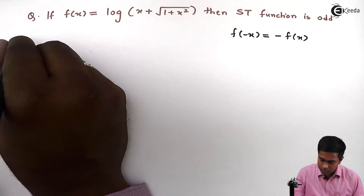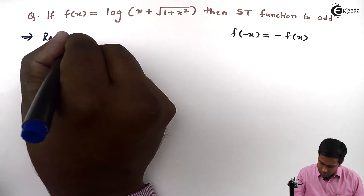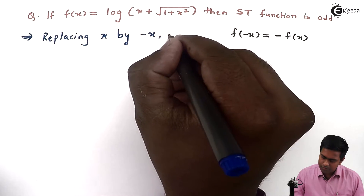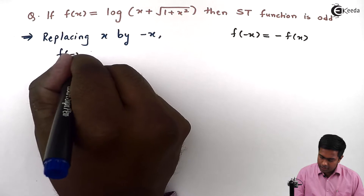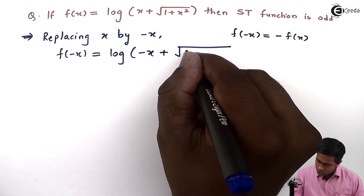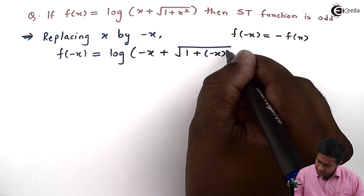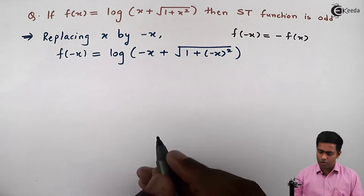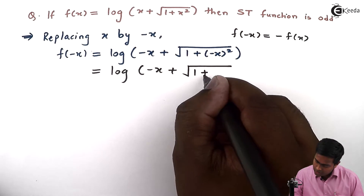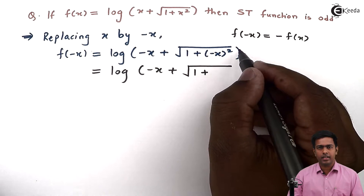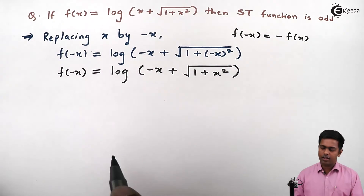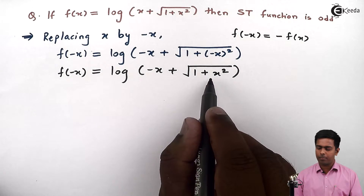Replacing x by -x, we will get f(-x) equal to log of (-x plus root of 1 plus (-x) squared). Solving this, the square of -x is x squared, so we get f(-x) = log of (-x plus root of 1 plus x squared).